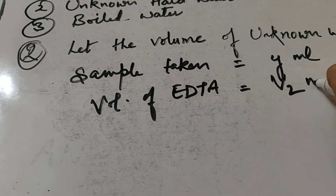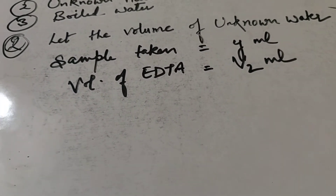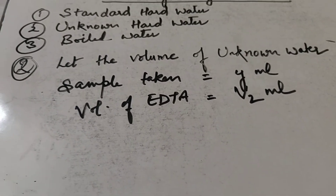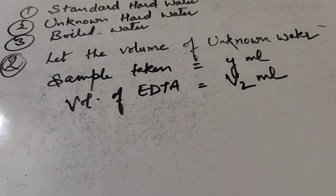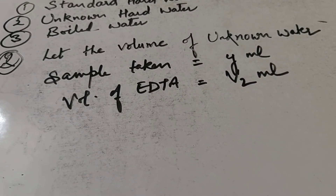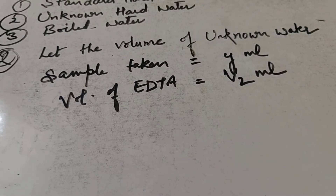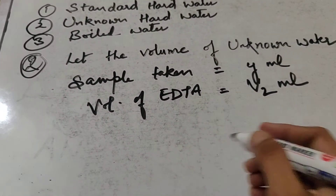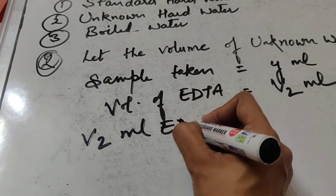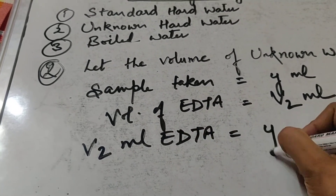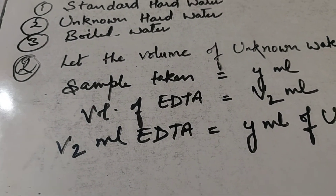The volume of EDTA used for the unknown water is V2 ml. In the first step you used V1; this time the burette reading is V2 — it could be 5.2, 3.2, whatever your burette gives. So V2 ml EDTA neutralizes Y ml of unknown water sample.